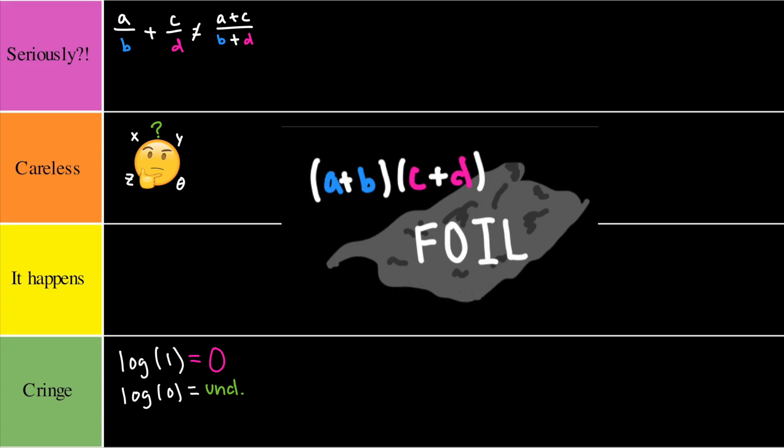Next up we got the expansion of binomials, and if you have two of them you can use FOIL. However, oftentimes students forget this and just multiply them wrong in some weird fashion. I would have to put this in the seriously tier.